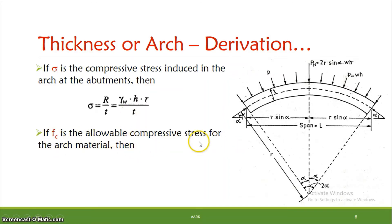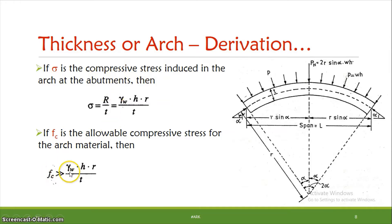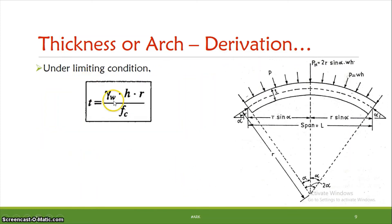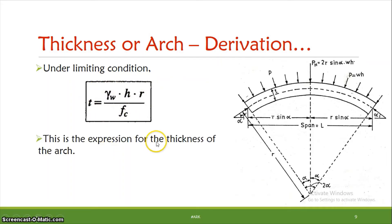If Fc is the allowable compressive stress for the arch material, then for the safety condition, Fc must be greater than the compressive stress induced: Fc ≥ γ_w × H × r / T. Rearranging, in the limiting condition, the thickness equation becomes: T = γ_w × H × r / Fc. This is the equation for the thickness of the arch.